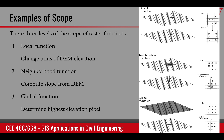For example, if we have a DEM dataset, which is the elevation, and we convert the units of the elevation from feet to meters, then that would be considered a local operation. Each pixel will be multiplied by some factor to compute a new pixel, so that would be a local operation.